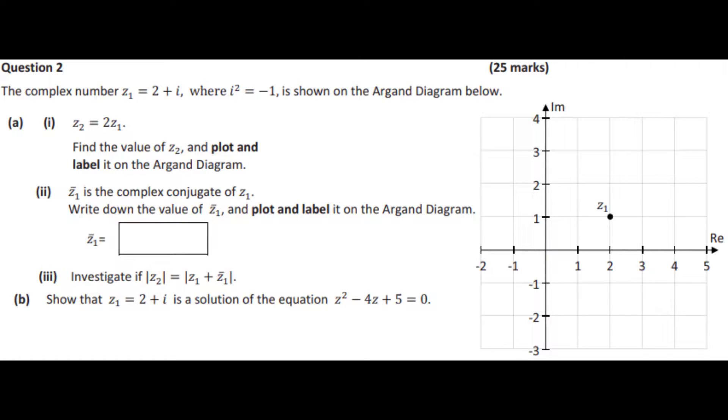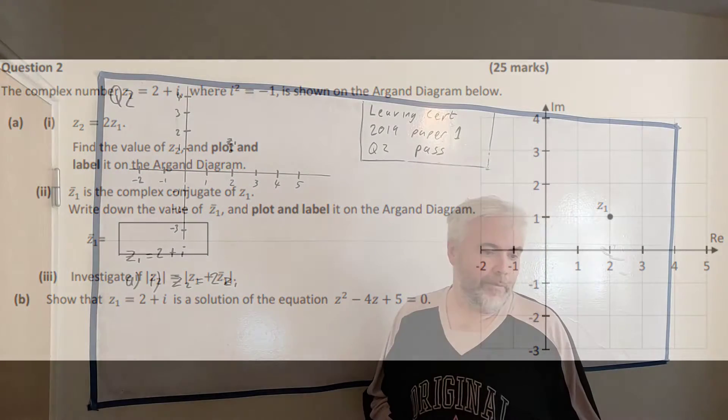This is question two of 2019 ordinary level Leaving Certificate paper. It is made up of two parts A and B and involves complex numbers. As you can see on the right part, we have a graph we need to plot our answers onto. If you do not have a copy of this question, look in the description below for a link to an image.